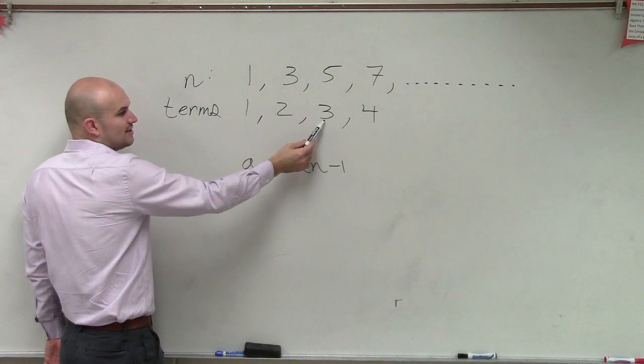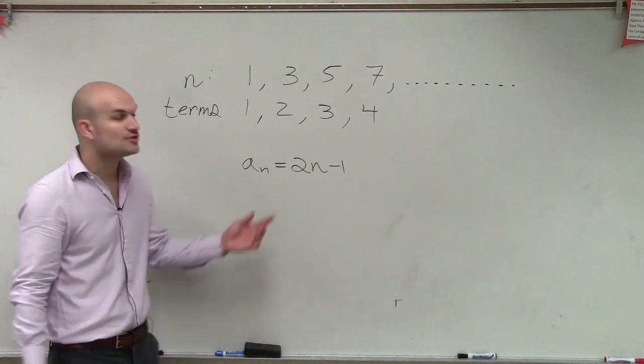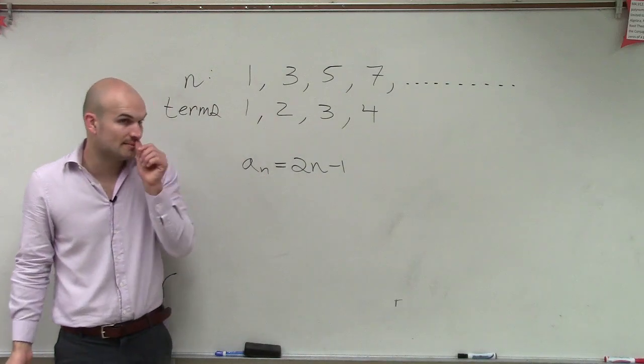2 times 3 is 6 minus 1 is 5. So yes, your formula is going to be a sub n equals 2n minus 1. Yes, Kara?